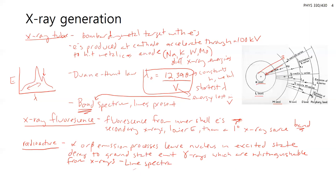Just like using white light versus a laser source in visible, UV, or IR optical techniques — here for x-rays, using a radioactive source is similar to using a laser source in the visible region, giving you a nice line spectrum so you know exactly what wavelength you're using. For example, commonly used is iron-55, which in its decay process will produce a 2.1 angstrom line.